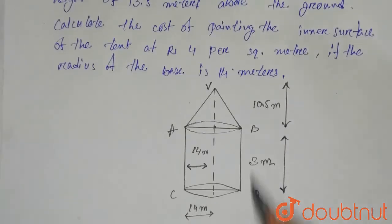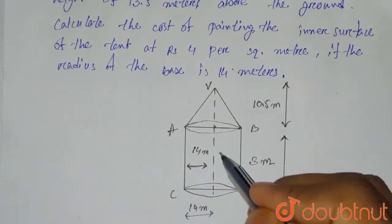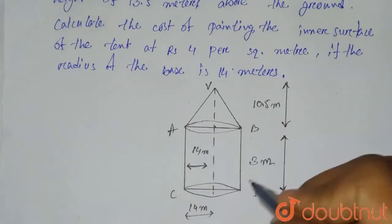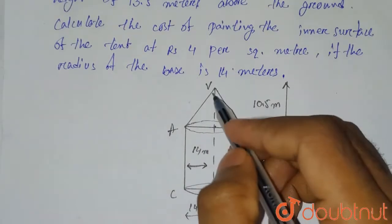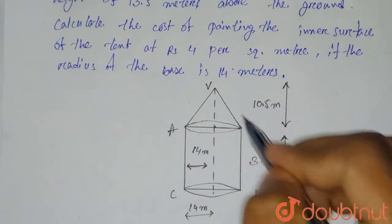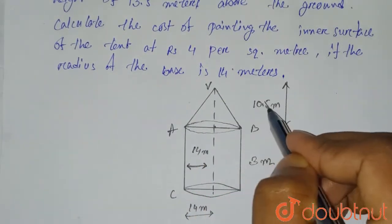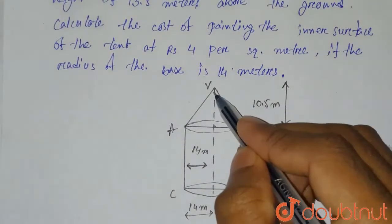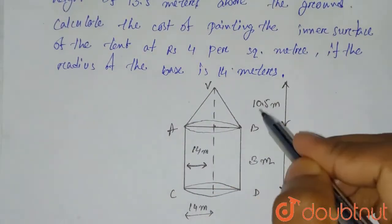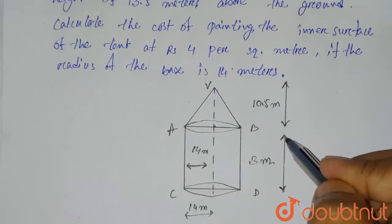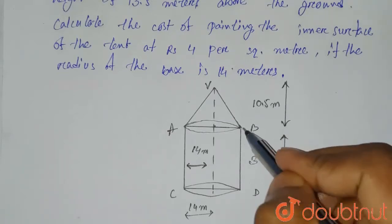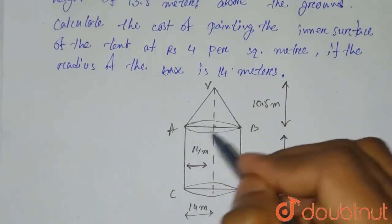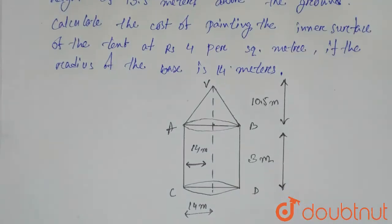So let's say this is our tent where the cylindrical part height is 3 meters. The height of the conical part is 13.5 minus 3, that means 10.5 meters, because it is said that the total height of the tent is 13.5 meters. Since the cylindrical part is 3 meters, the conical part will have a height of 10.5 meters.